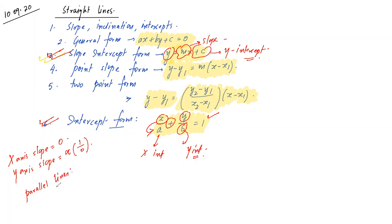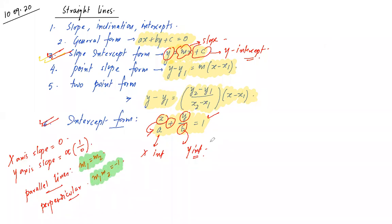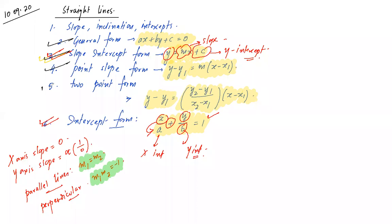Two lines are parallel when they have equal slopes, i.e., m₁ = m₂. Two lines are perpendicular when the product of their slopes equals minus one. In day two of straight lines we worked through a variety of questions without starting any new topic. Today we begin a new format — so far we have seen five; in Class 11 we will see eight total. The sixth format is called the normal form.